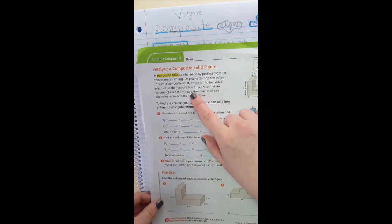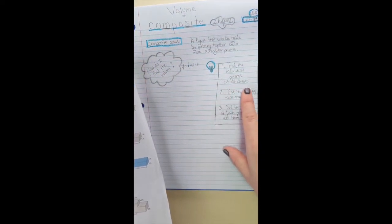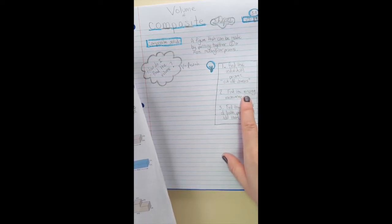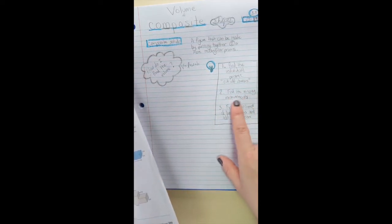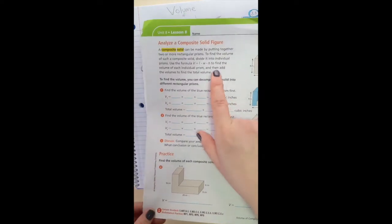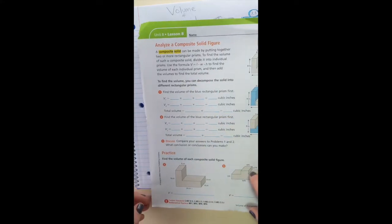So in this description, they didn't talk about our step number two, but I have looked through the shapes and have done this before, and know that there are always going to be some missing measurements. So we're going to throw in our step two in here. Find the missing measurements. Then we're going to find the volume of each individual prism and add the volumes to find the total volume.